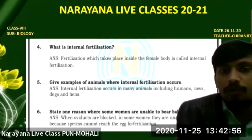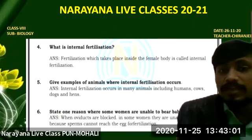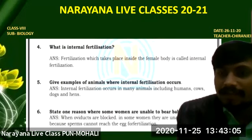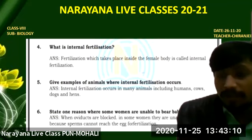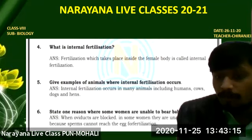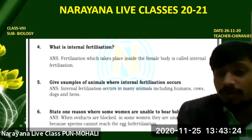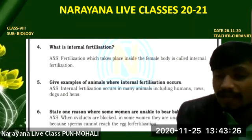The next question: what is internal fertilization? Fertilization which takes place inside the female body is called internal fertilization. For example, in humans, the sperm travels into the female body and the egg present in the female body gets fertilized. That means fertilization happens inside the female body, so we call this internal fertilization.